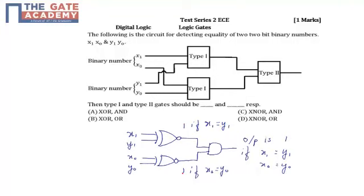Finally, to check the equality, both of these outputs should be 1. Hence we are using an AND gate. So output would be 1 if and only if x1 is equal to y1 and x0 is equal to y0. That is nothing but our option C, that is XNOR and AND gate. Thank you.